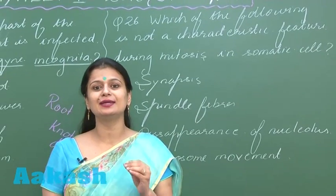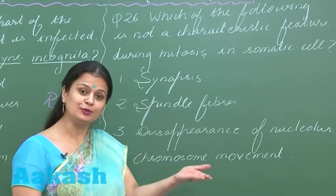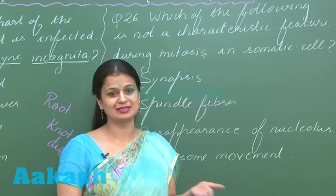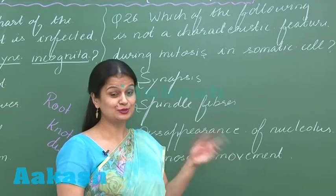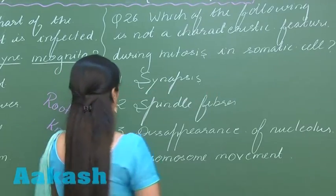In meiosis I have told you that during the zygotene stage, pairing of homologous chromosomes occurs and what you call the pairing of homologous chromosomes—it is known as synapsis. So synapsis is the feature of meiosis, not mitosis.